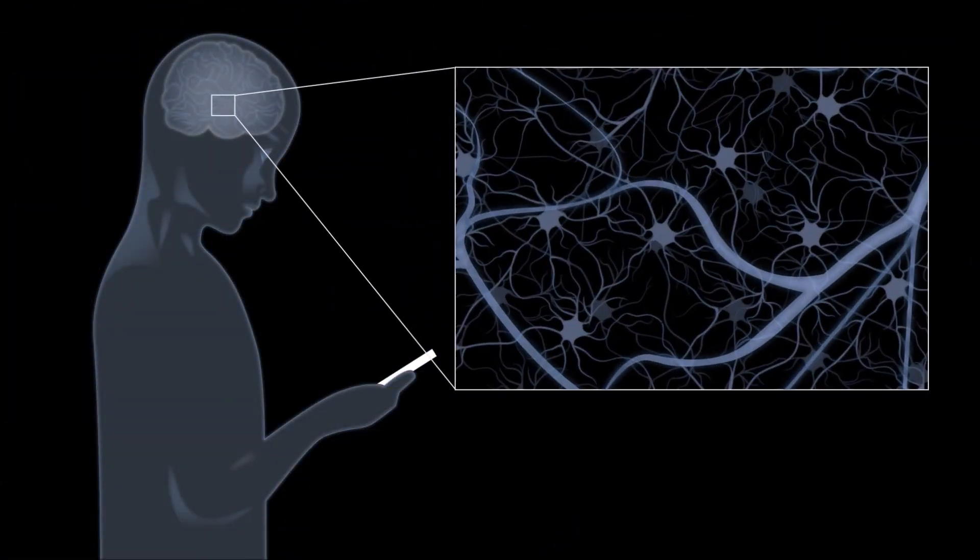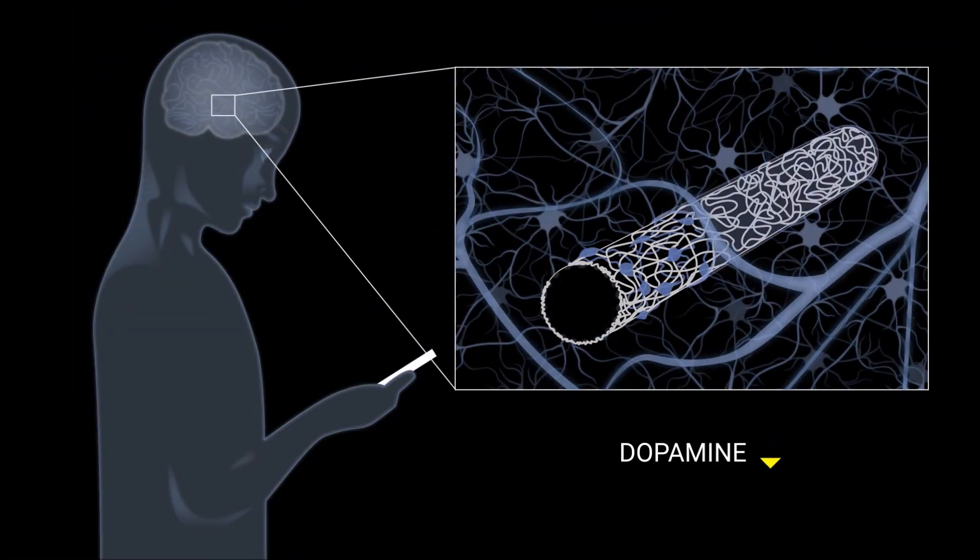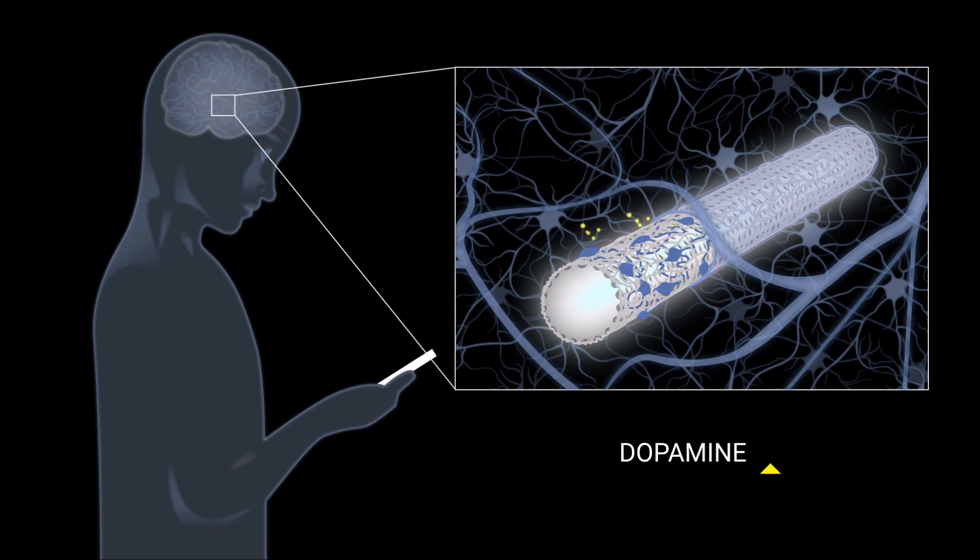For instance, the loss of the neurotransmitter dopamine in the brain causes the typical tremors in Parkinson's patients. This loss of dopamine will activate the device and give patients or doctors the opportunity to remotely treat the disease.